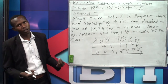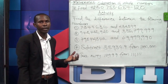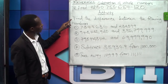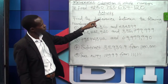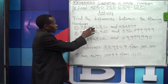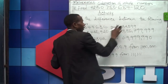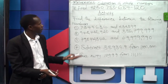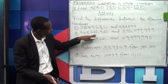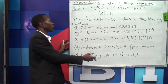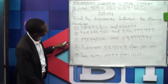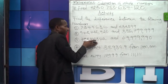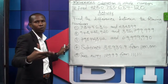Now let's continue with our activity for today's lesson. Find the difference between the following numbers. When they say difference, you bring out the bigger number minus the smaller number. Number one: find the difference between the first number and the second. Number two: find the difference — big number minus smaller number. Number three: still find the difference — biggest number minus the smaller number gives you the difference.